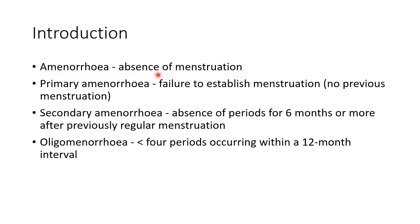Amenorrhea is absence of menstruation. Primary amenorrhea is failure to establish menstruation — there is no previous menstruation. Secondary amenorrhea is absence of periods for 6 months or more after previously regular menstruation. Oligomenorrhea is less than 4 periods occurring within a 12-month interval.